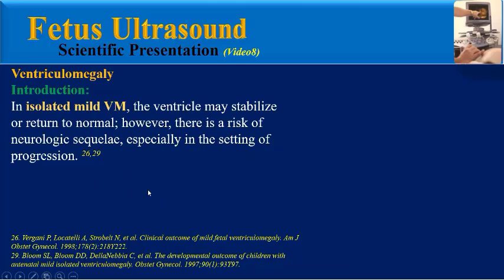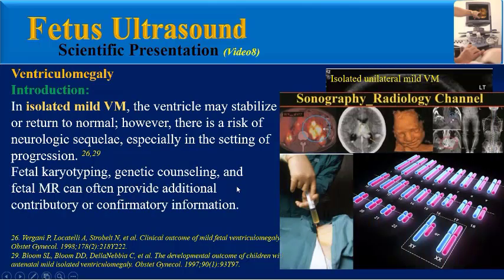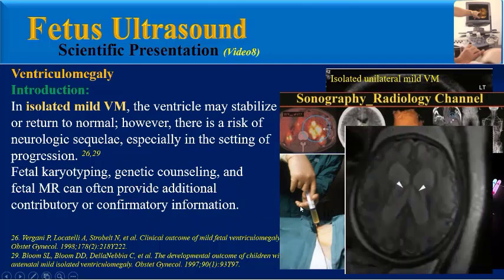Severe and moderate ventriculomegaly are associated with higher risk of prenatal or neonatal death and poor neurologic outcome. In isolated mild ventriculomegaly, the ventricle may stabilize or return to normal size; however, there is a risk of neurologic sequelae, especially in the setting of progression. Fetal karyotyping, genetic counseling, and fetal MRI can often provide additional contributory or confirmatory information.